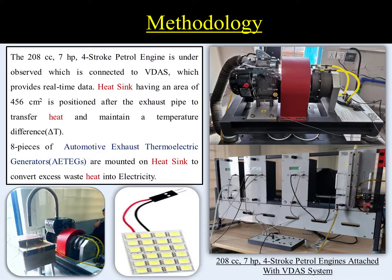Now moving towards the methodology adopted to complete this project. The waste exhaust gas heat of a 208cc 4-stroke petrol engine is recovered. The engine is connected to a versatile data acquisition system which provides real-time data. A heat sink is positioned after the exhaust pipe to transfer heat and maintain a temperature difference, Delta T. Eight pieces of automotive exhaust thermoelectric generators are mounted on the heat sink to convert excess waste heat directly into electricity.